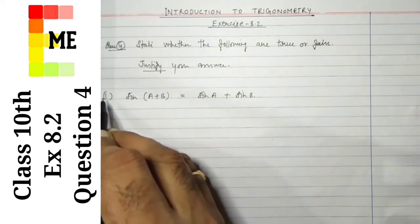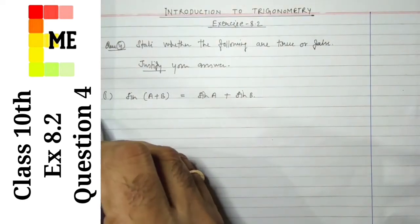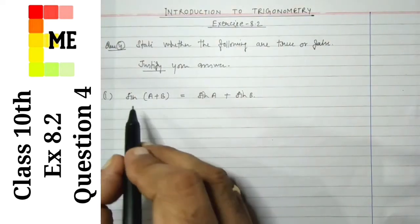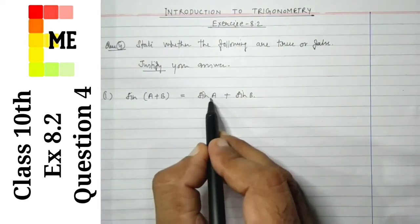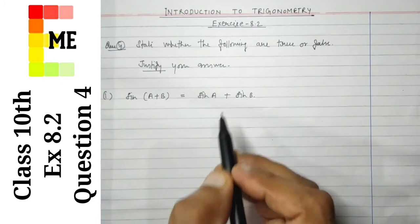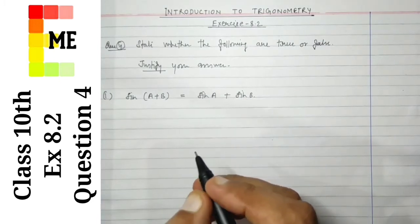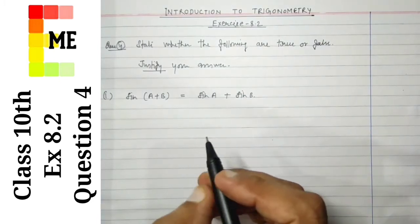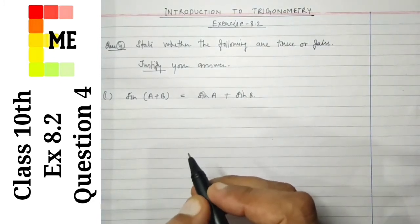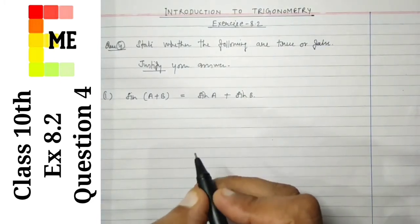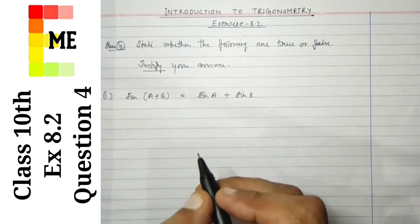In part 1, we have to check if sin(A + B) is equal to sin A plus sin B. As you all know, we are dealing with complementary angles.